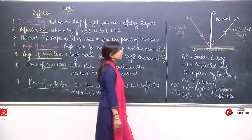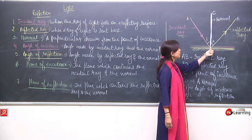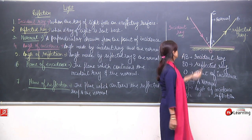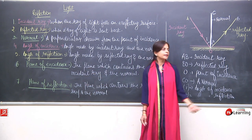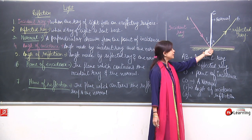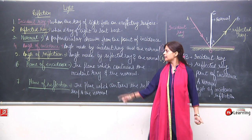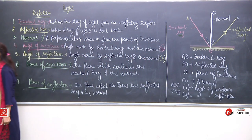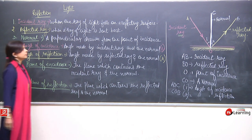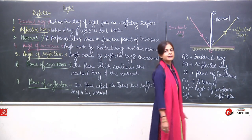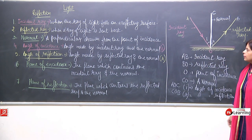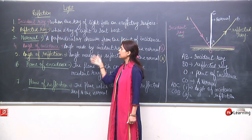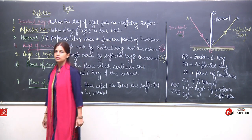O is the point of incidence. The plane which contains the incident ray and the normal is the plane of incidence, and the plane which contains the reflected ray and the normal is the plane of reflection. These terms are very important, and the next topic is the law of reflection — which requires knowing incident ray, reflected ray, normal, angle of incidence, angle of reflection, and the plane.